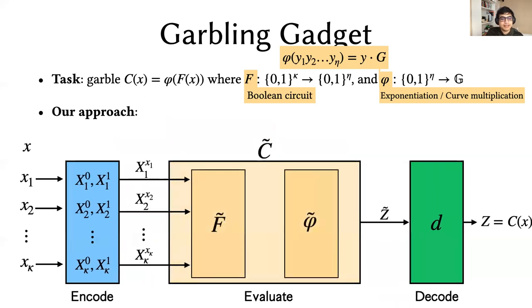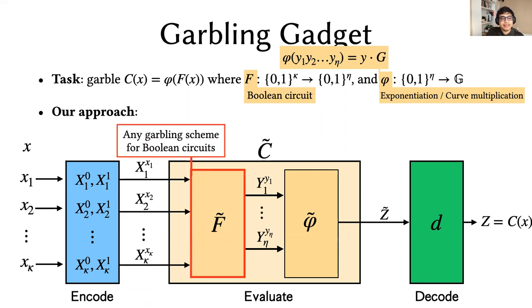Looking under the hood, we split C tilde into two distinct components. F tilde, that's the garbling of the Boolean circuit F, and φ tilde, that's the garbling of the exponentiation gadget. F tilde receives as input X, produces an intermediate set of Y labels, capital Y, that corresponds to the intermediate string Y, and φ tilde translates this capital Y into the encoded output Z tilde. We can use any standard garbling scheme for Boolean circuits to produce F tilde. Think of half gates, for instance. And for φ tilde, we construct a new gadget that's inspired by the oblivious linear evaluation technique of Gilboa.